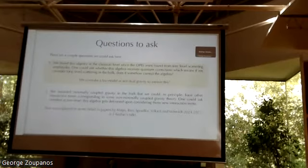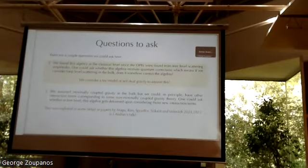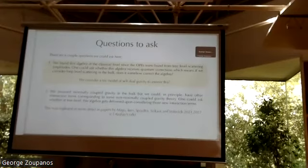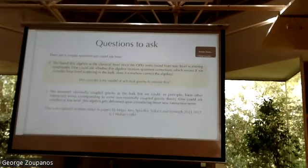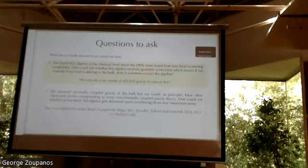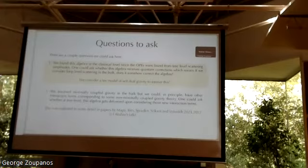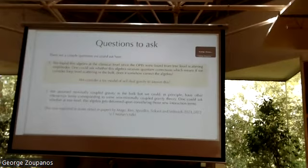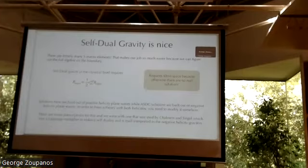There are a couple of questions we could ask at this point. One is: we found this algebra at the classical level, because all of these OPEs were derived by transforming tree-level amplitudes in the 4D theory — so does it receive quantum corrections? What happens when we consider loop-level amplitudes? That's what we were concerned with in this paper, where we considered a toy model of self-dual gravity. Another interesting question is what happens if we have other interaction terms in the bulk theory — even at tree level, does this algebra get deformed? That story was explored in other papers, but I won't talk about it here.